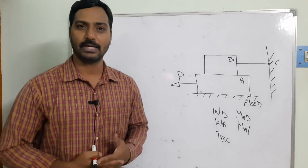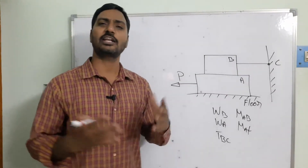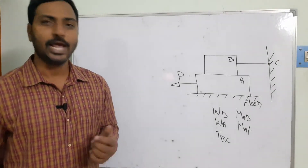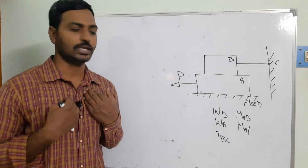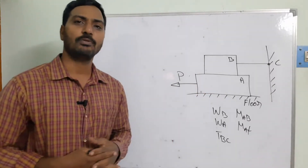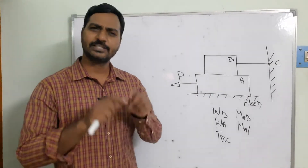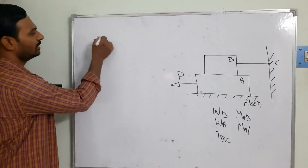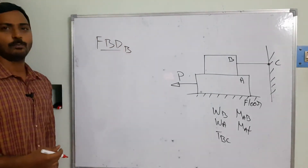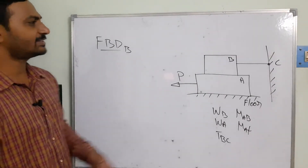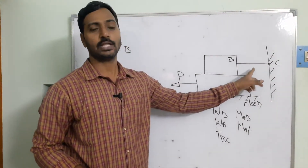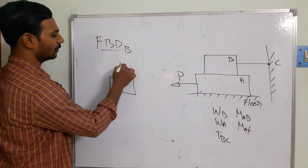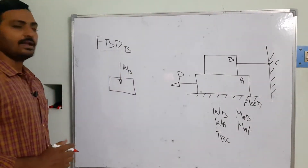Our next step is solving the unknown parameters — either P, the frictional force, the tension, or the normal reaction. I will first take the free body diagram. Should I take A or B? If I take A, the unknown parameters will be a very large number. For simplification of the mathematical equations, I am going to take B as the free body diagram for the first case.